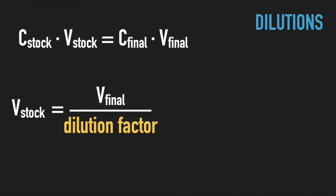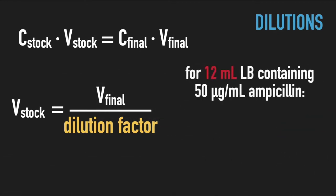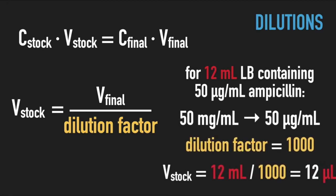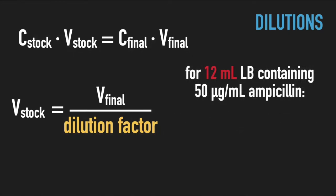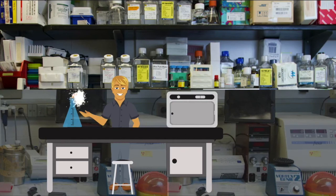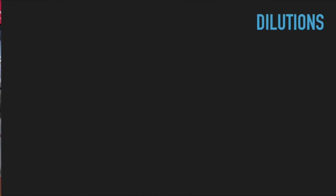Similarly, to make 12 milliliters LB broth with 50 micrograms per milliliter penicillin, you simply need to add 12 microliters stock penicillin solution into 12 milliliters broth. Using dilution factors is an easy and foolproof way to calculate the required volume of the stocks.